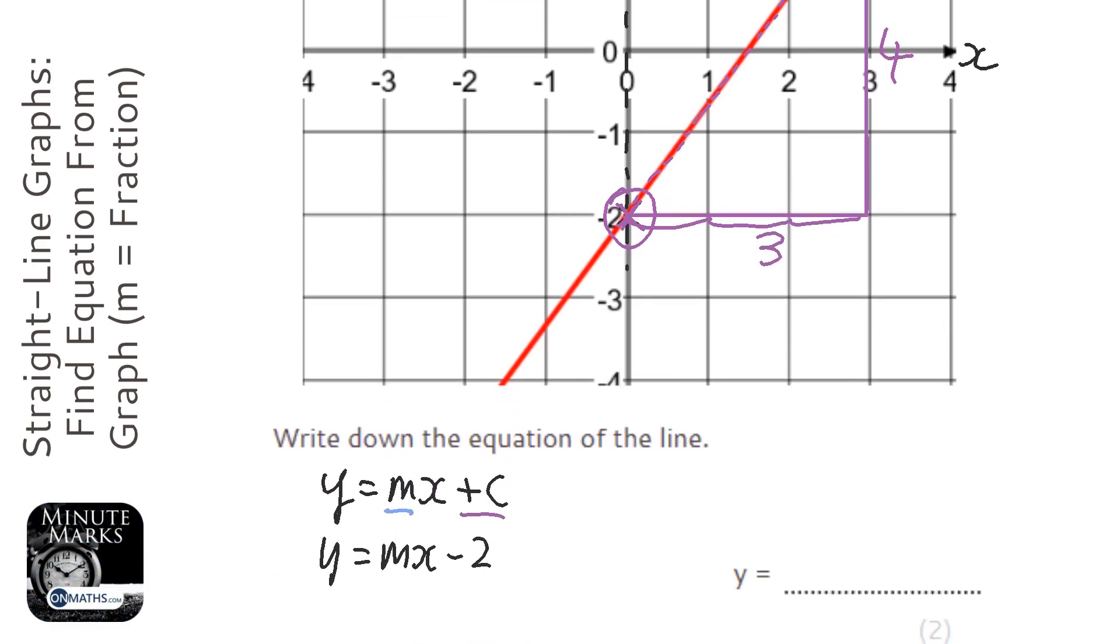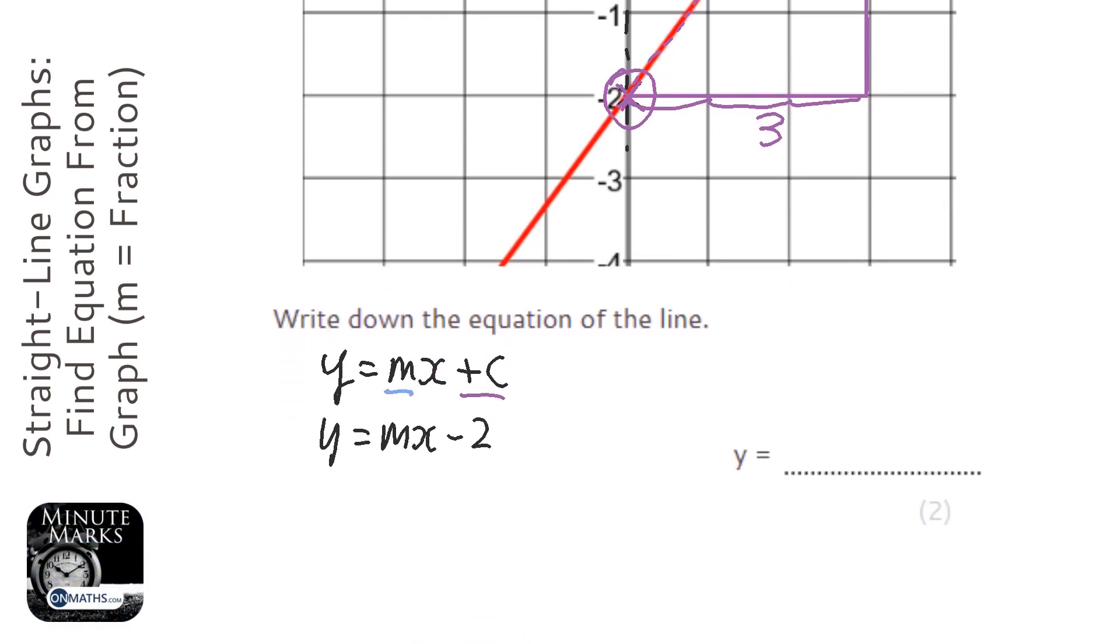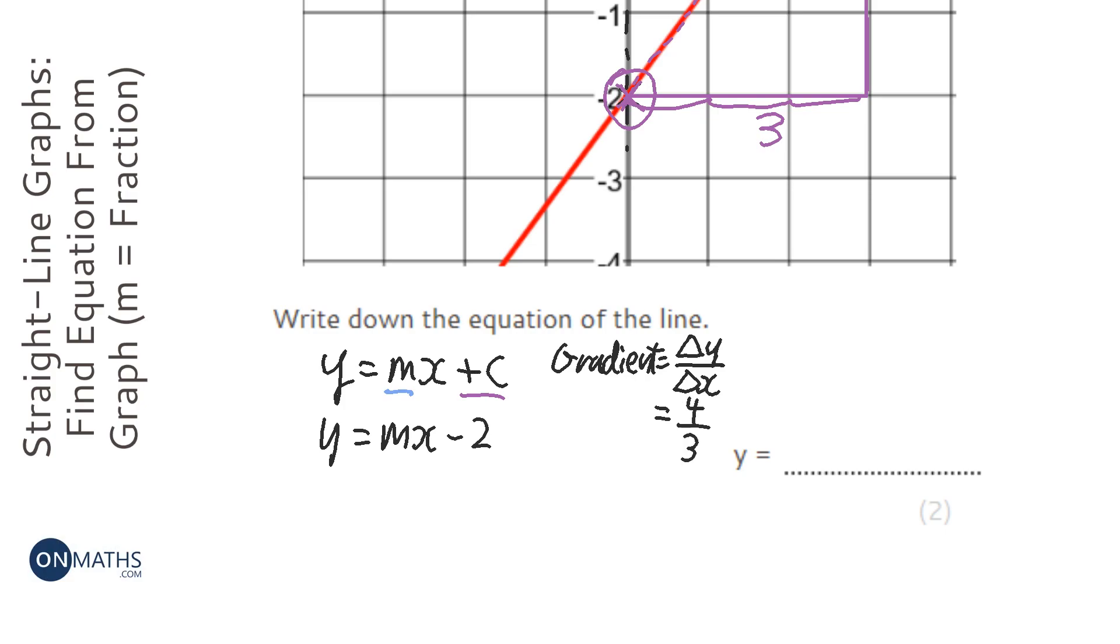And then the gradient is, so let's just write this down, the gradient is the change in y over the change in x. So I said that y changed 4 and x changed 3. So it's 4 over 3.